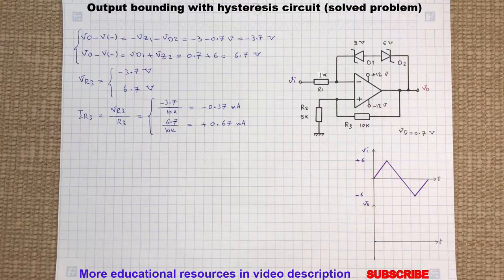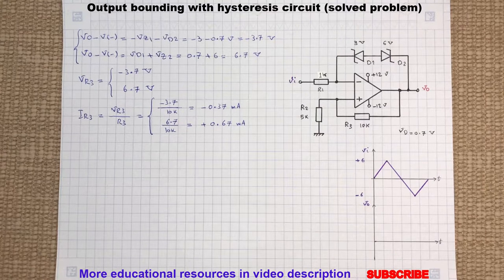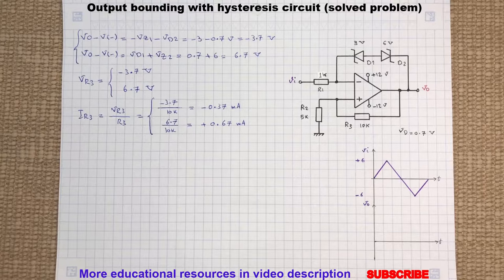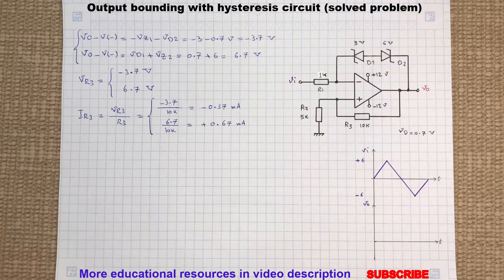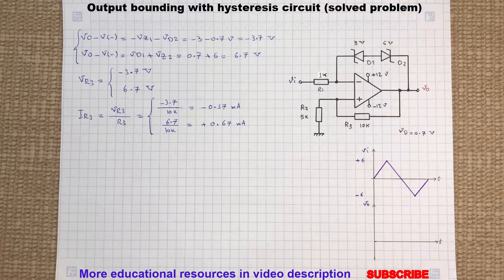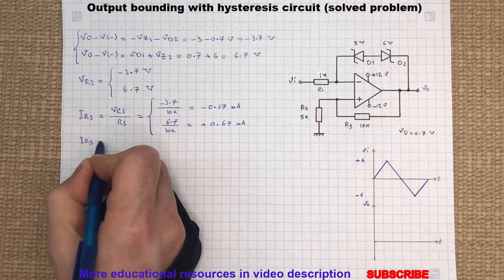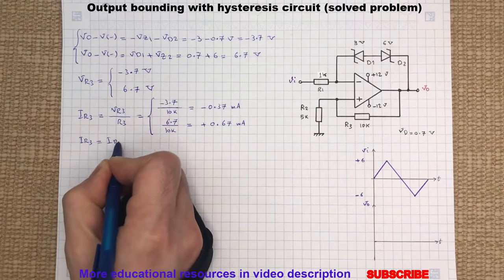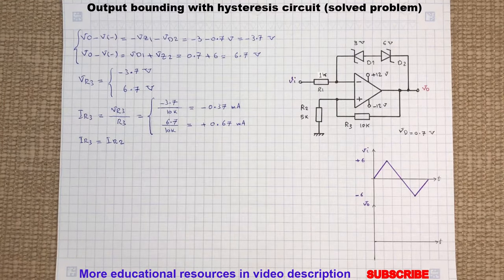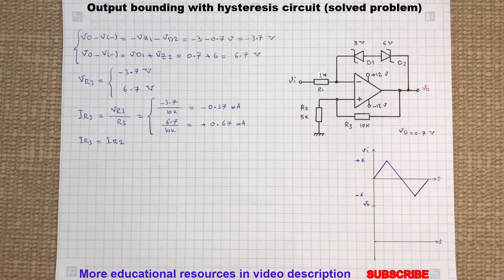Now since the op amp has a very large input resistance, we can neglect the current flowing through the op amp input terminals and assume the same current flowing through the resistor R3 will flow through the resistor R2. So we can write IR3 equals IR2. Therefore we can calculate the voltage across the resistor R2.